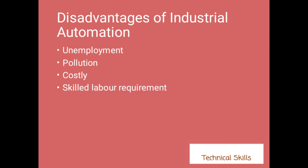The last disadvantage is skilled labor requirement. While automation creates unemployment for unskilled workers, it also creates employment for skilled labor. Everything will be done by skilled labor who have technical knowledge. So unemployment exists for layman workers, but there is a requirement for skilled labor.